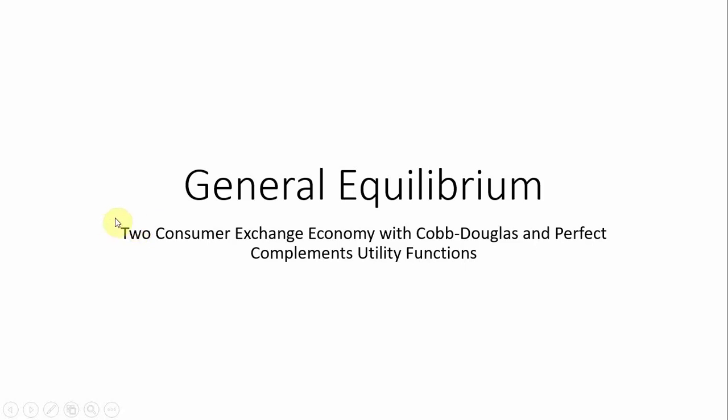Here I'll do a general equilibrium problem. We have an exchange economy with two consumers. One has a Cobb-Douglas utility function, the other a perfect complements utility function.